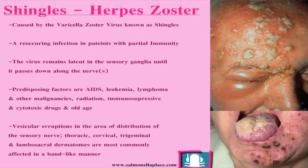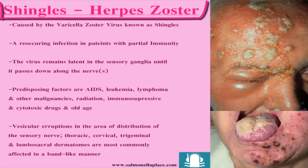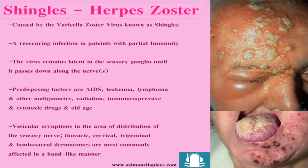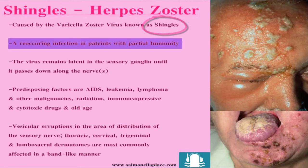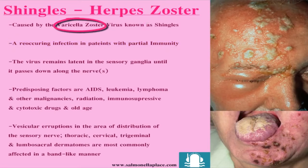Hi everyone, this is Alex from Salmonella Place and today's periodontology lecture is on herpes zoster. Herpes zoster, more commonly known to the general public as shingles, is a recurring infection in patients with partial immunity to the virus varicella zoster.